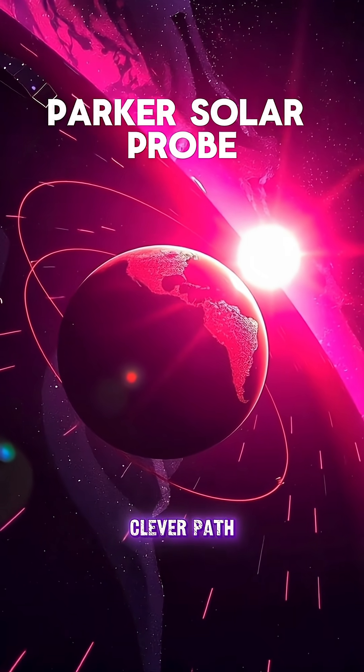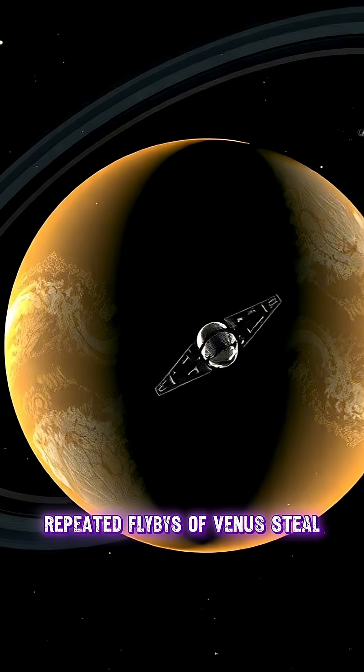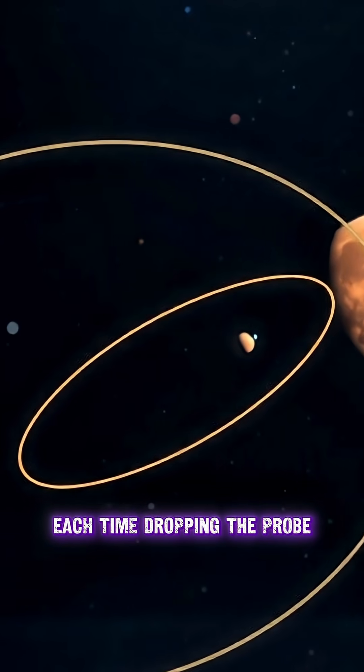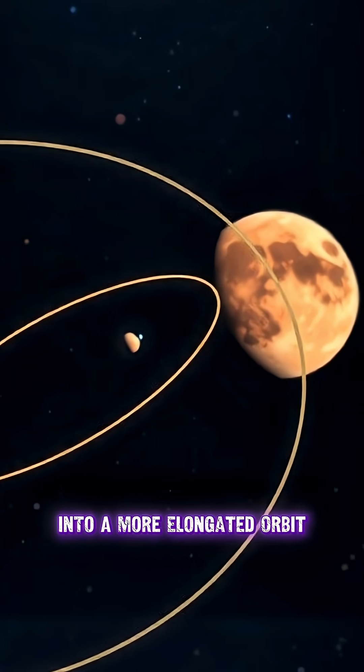Parker Solar Probe uses a clever path. Repeated flybys of Venus steal a little orbital energy each time, dropping the probe into a more elongated orbit.